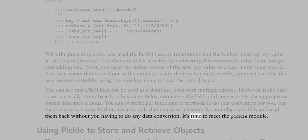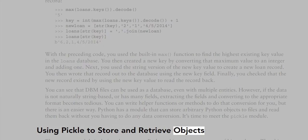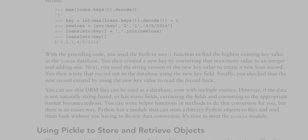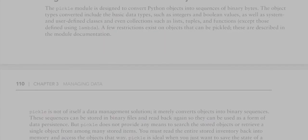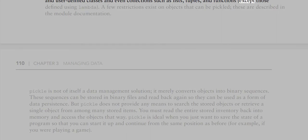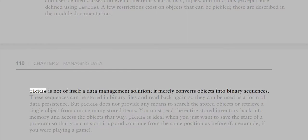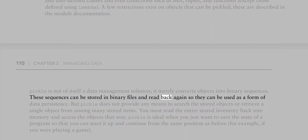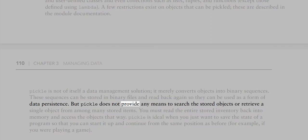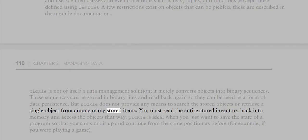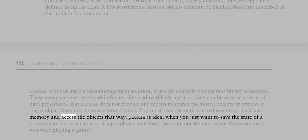Python has a module that can store arbitrary Python objects to files and read them back without any data conversion: the pickle module. Pickle converts Python objects into sequences of binary bytes, including basic data types such as integers and booleans, as well as system and user-defined classes, and collections such as lists, tuples, and functions (except lambda). Pickle is not of itself a data management solution — it merely converts objects into binary sequences — and does not provide any means to search stored objects or retrieve a single object from many.